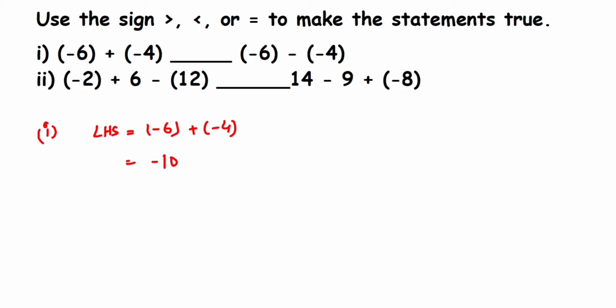Why? Because 6 is greater and its sign is negative, so the negative sign will be there. Then for the RHS, we have (-6) - (-4). This is equal to (-6), and here this minus is getting multiplied with (-4), or we can say this will become plus 4.